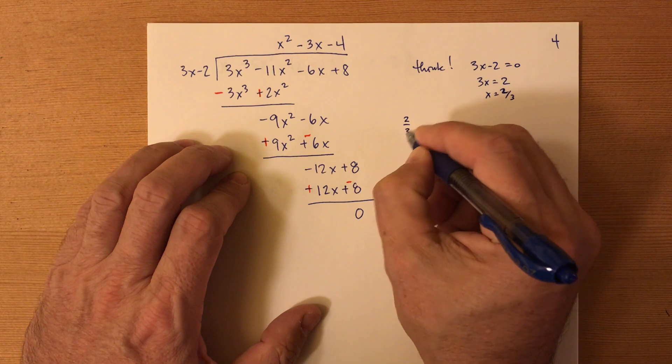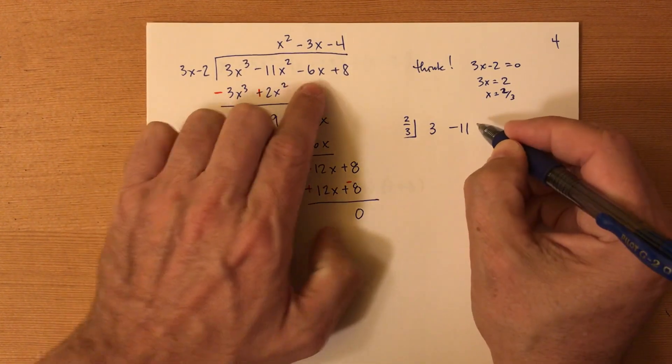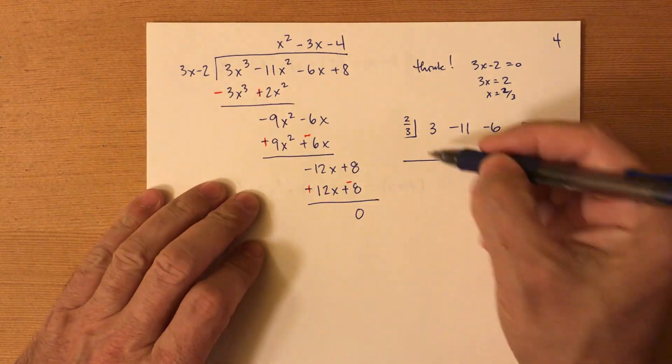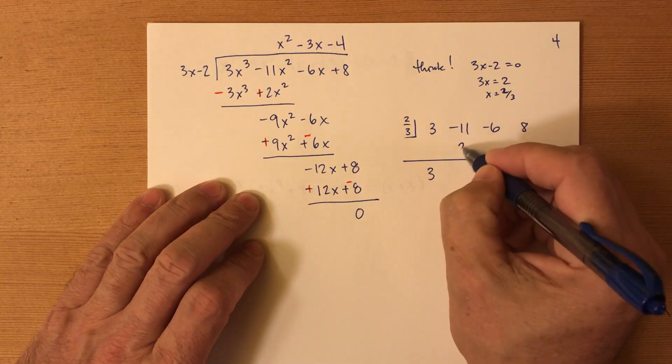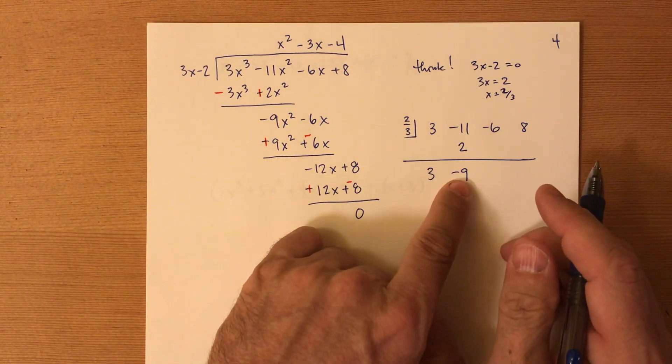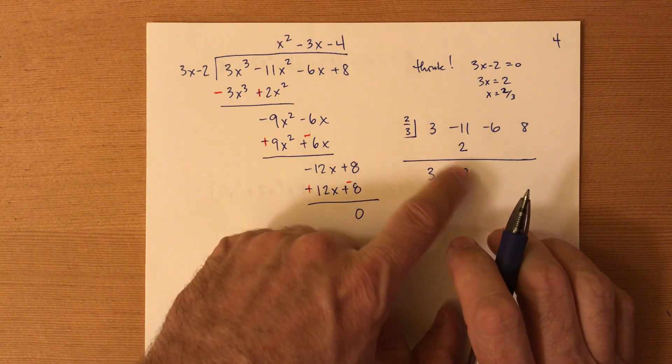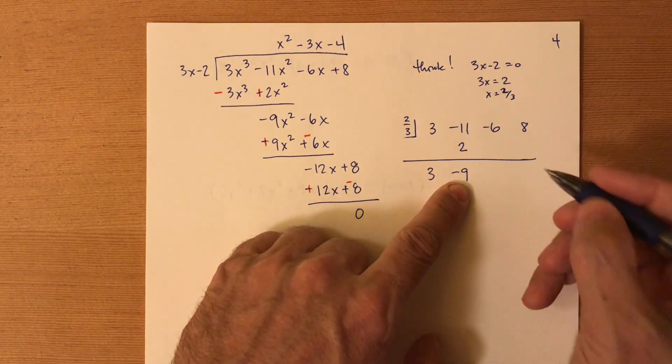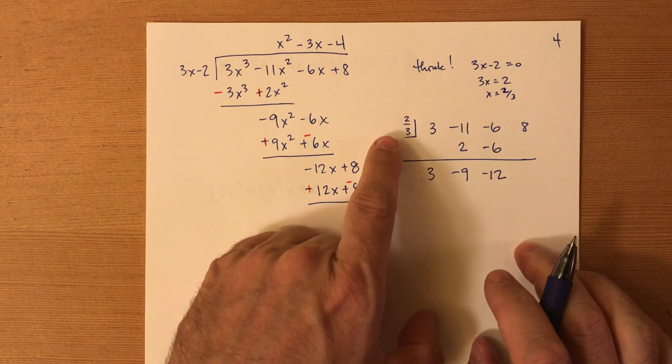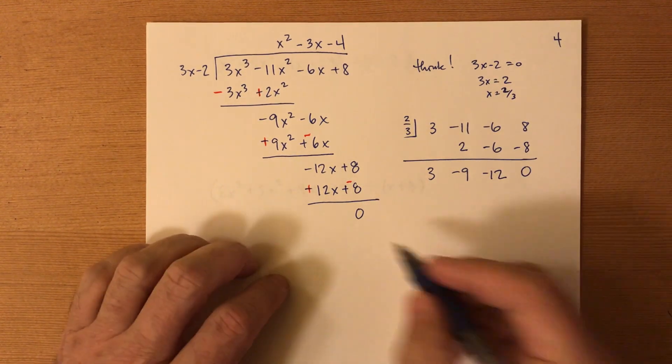Now put the three, put the negative 11, put the negative six, put the eight. Here we go, kids, this is gonna be amazing. Drop down three, two thirds times three is two. Add those together, negative nine, two thirds of negative nine. I know you guys like all fractions. Yeah, you're a big kid. Now you can do this. Negative two thirds times negative nine is negative six. Add those together negative 12. And you're like, this is never gonna work. Two thirds times negative 12 is negative eight. Winner, winner, chicken dinner.